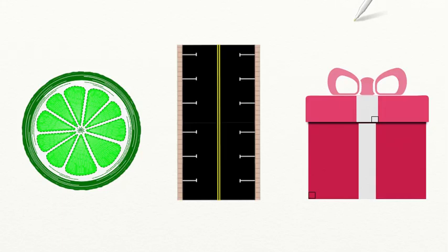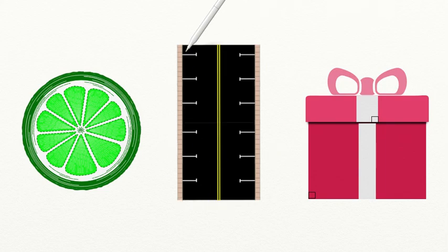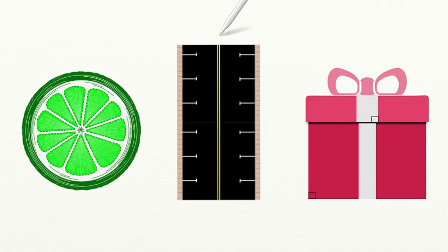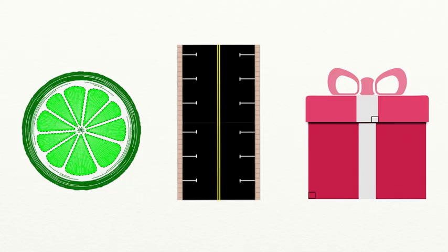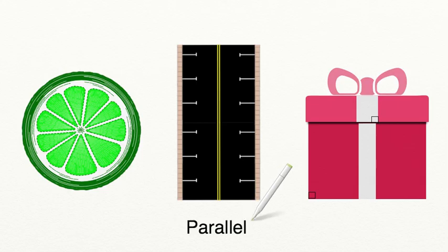Let's decide which image best represents parallel lines. Remember, parallel lines run parallel to each other, which means they never meet and they're evenly spaced apart. If we look at the image in the middle, we can see that these white lines are evenly spaced apart and they're never going to meet — same with the yellow lines in the median of this road. This is a great example of parallel lines. If you're familiar with parallel parking, we call it that because you're parking parallel to the side of the street.